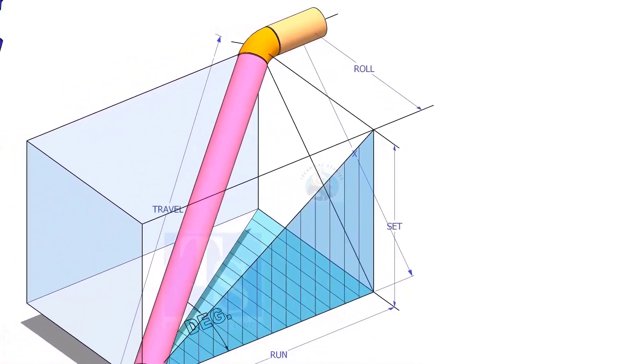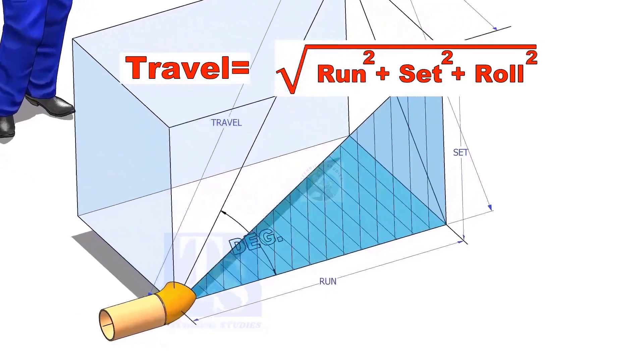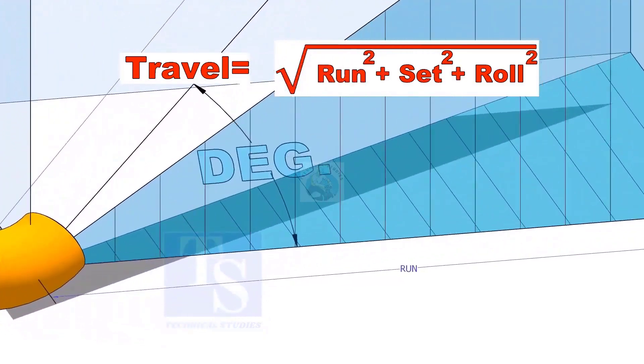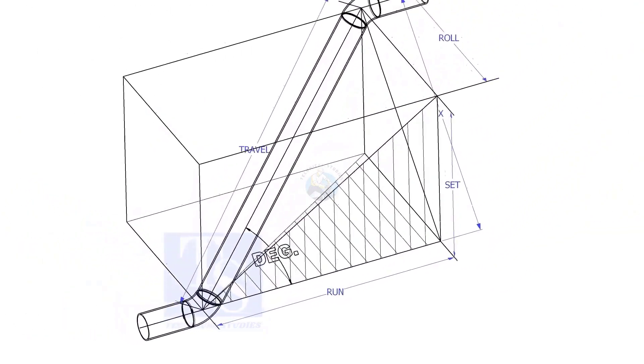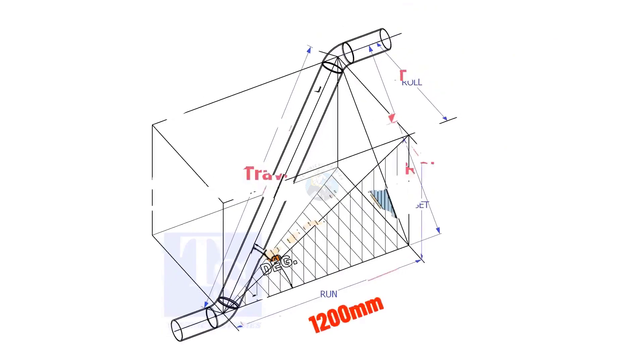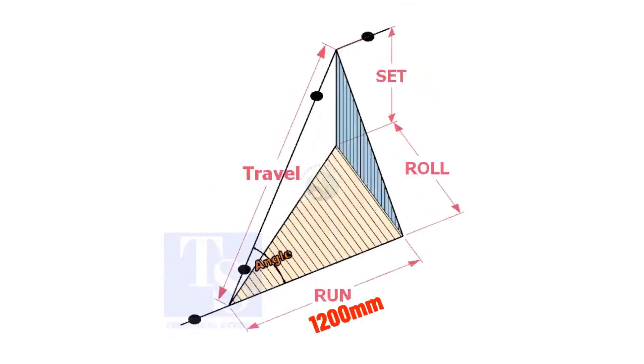The formula to calculate the travel length is the square root of the sum of run squared, set squared, and roll squared. Assume that the run is 1200 mm, set is 1000 mm, and the roll is 800 mm.